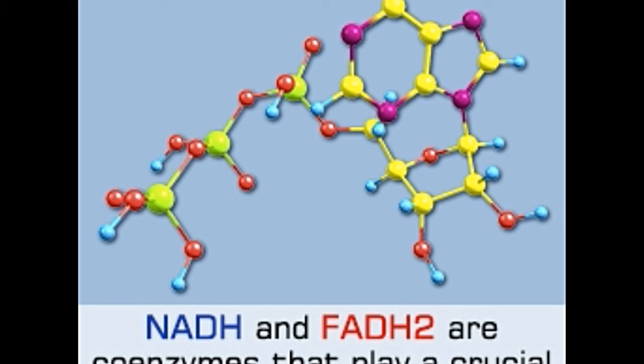Pyruvate is a three-carbon molecule which gets converted into acetyl-coenzyme-A. In the Krebs cycle, acetyl-CoA is oxidized, which releases high-energy electrons.